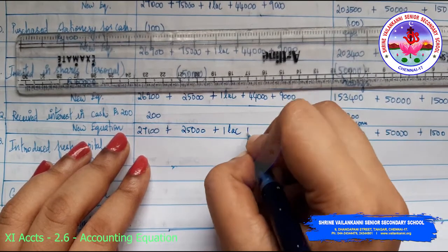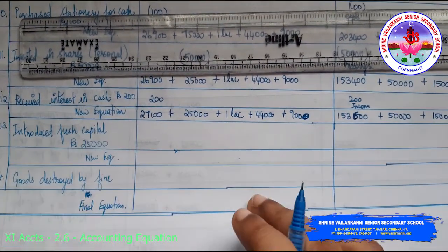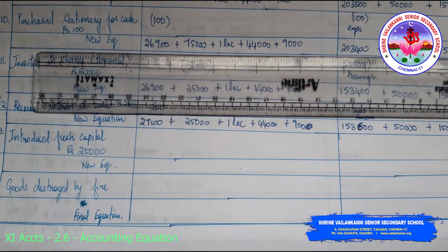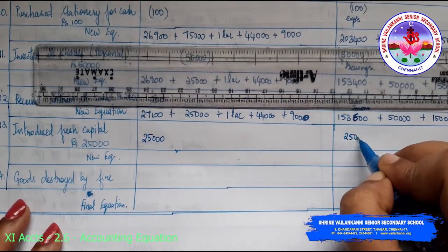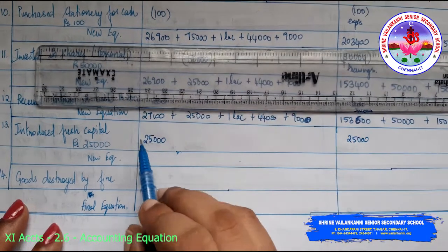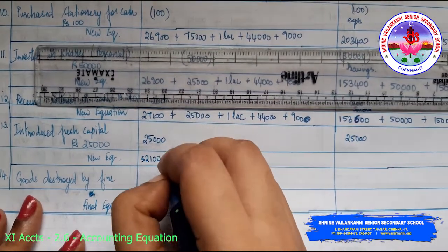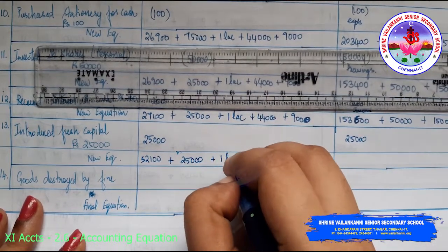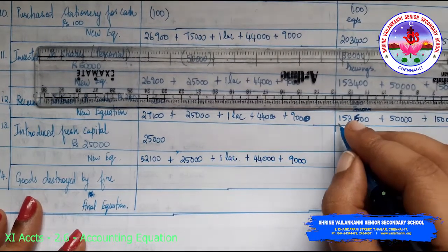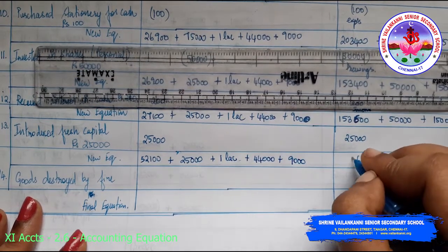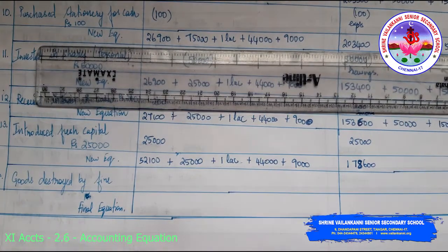Thirteenth transaction: introduced fresh capital 25,000. This increases the cash balance and also increases capital. So 25,000 plus 27,100 gives 52,100 cash. Capital becomes 1 lakh 53,600 plus 25,000 equals 1 lakh 78,600. Other balances: bank 25,000, furniture and building 1 lakh, stock 44,000, debtors 9,000, creditors 50,000, security deposit 1,500.